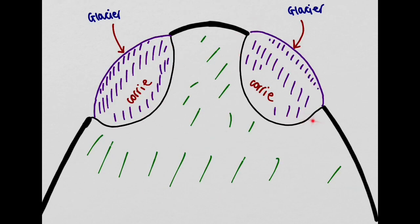So we've got two coris that have formed and you can see that the erosive processes that are taking place in the backwalls such as plucking and freeze-thaw weathering.